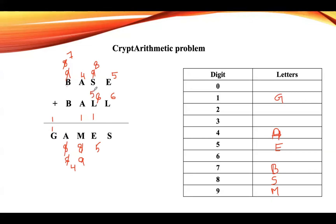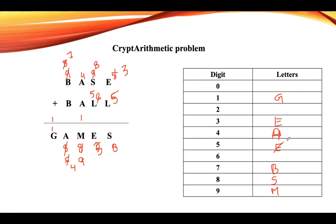Let us take L as 5. Now 8 plus 5 is 13. 13 plus 1 carry would be 14, so we should not take carry. So 8 plus 5 is 13 — 3 is not assigned to any letter, so assign 3 to E. E becomes 3 and L is 5. Now add L plus E: 5 plus 3 gives 8, and S value is 8. So this is the solution: E is 3, L is 5.